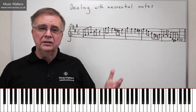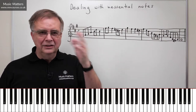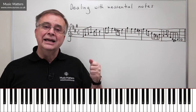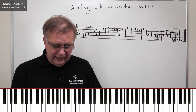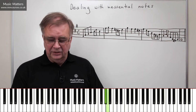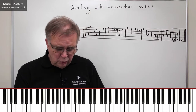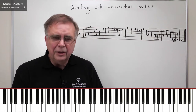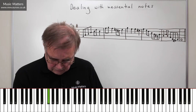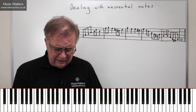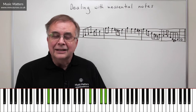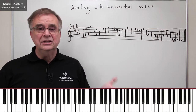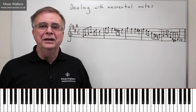When it comes to passing notes and certain other inessential notes, if they happen between beats they're called unaccented. If they happen on a beat they're called accented, and accented will always be stronger. For example, with a passing note like F-sharp, G-sharp, A — if I slip the G-sharp between the beats you kind of hear it but it's not over-significant. However, if I put it on the beat it will be stronger — that's an accented passing note. So unaccented means off the beat and a bit gentler; accented means on the beat and a little bit stronger.